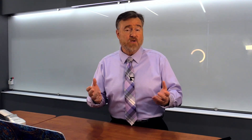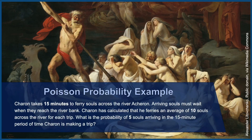For our Business of the Week, Dante has a real treat for us. If we want to use a Poisson distribution, what better place than a rafting trip? Dante tells us that in the afterlife, the ferryman Charon shuttles souls across the river Acheron, taking 15 minutes per trip. Arriving souls must wait at the river bank. Charon has calculated that he ferries an average of 10 souls across the river for each trip. What is the probability of five souls arriving in the 15-minute period? Is this, in fact, a Poisson experiment?